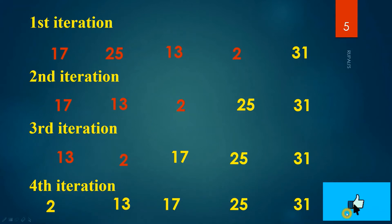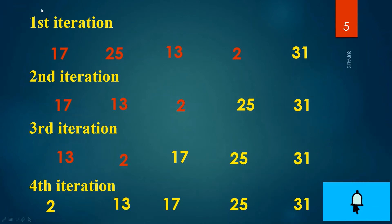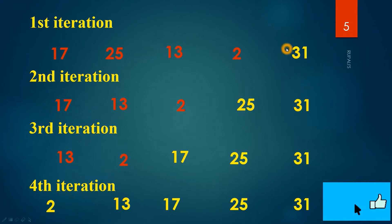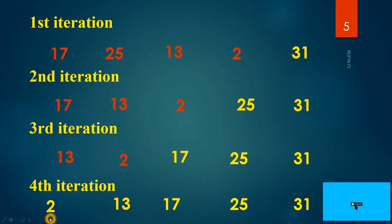How many elements are there? It is 5. If the elements are 5, then for sorting how many iterations are required? 4. So if the number of elements is n, then how many iterations are required? n minus 1. In the first iteration, how many comparisons are needed? 4. Second iteration: 3 comparisons. Third iteration: 2 comparisons. And the fourth iteration requires 1 comparison.